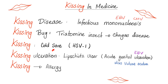Kissing can give you a cold sore if you kiss someone who has herpes simplex virus 1. HSV-1 is above the waist; HSV-2 is usually below the waist — usually, not always. Then there's kissing ulceration, also called kissing ulcer, lip shoots ulcer, acute genital ulceration, or ulcus vulvae acutum.